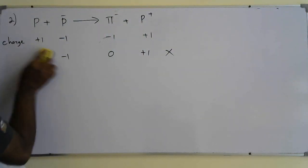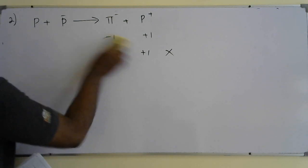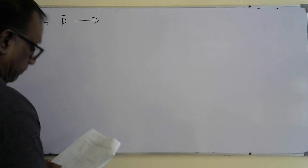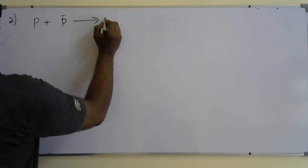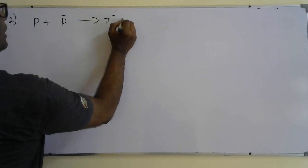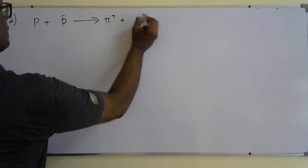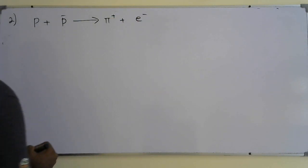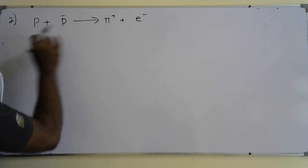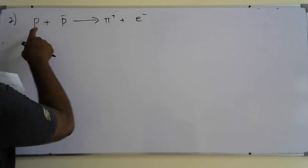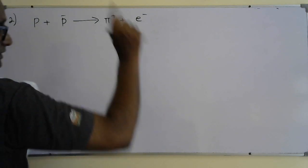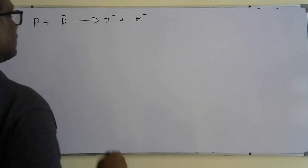For answer C — the outcomes are given as positive baryon and electron. Checking charge: proton +1, antiproton −1 gives zero before; after, the baryon is +1 and electron is −1, giving zero — charge is conserved.